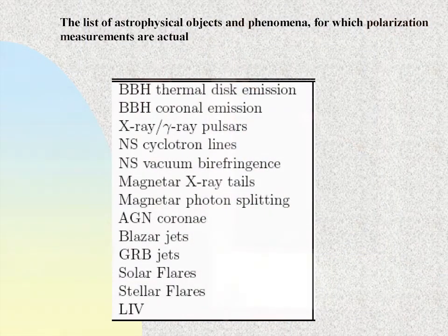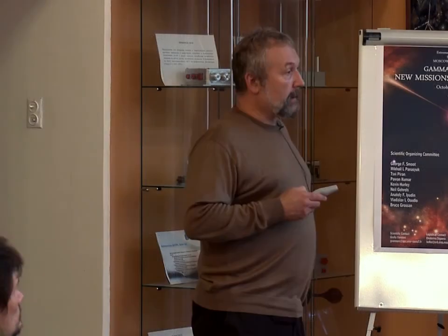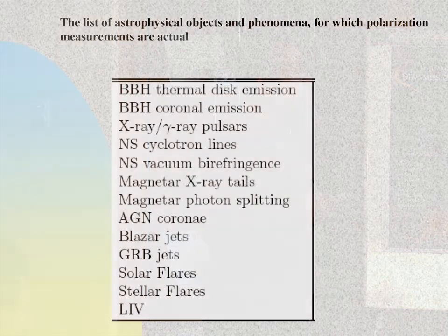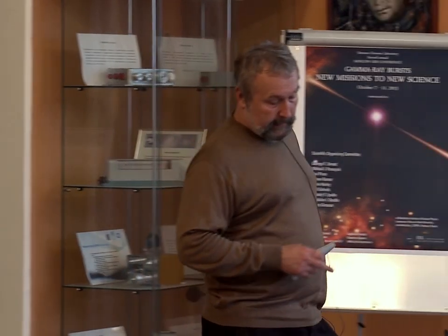Here is the list of objects and phenomena in whose hard emission a polarization component could be observed: binary systems with black holes (thermal disk emission and coronal emission), X-ray and gamma-ray pulsars, neutron star cyclotron lines, neutron star vacuum birefringence, magnetar X-rays, magnetar photon splitting — also nonlinear electrodynamic effects — active galactic nuclei, blazar and GRB jets, as well as solar and stellar flares.